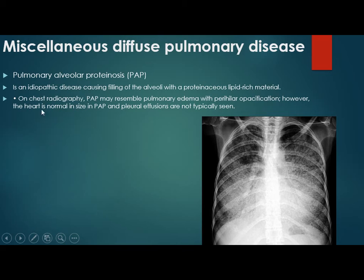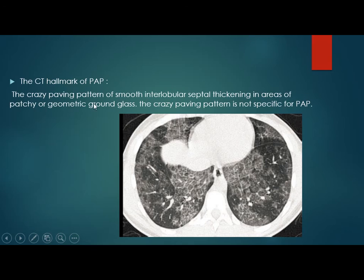Another miscellaneous diffuse pulmonary disease is pulmonary alveolar proteinosis. The characteristic feature is a mosaic geographic appearance, with perihilar opacification while the heart is normal in size with no effusion. This is an idiopathic disease caused by surfactant or lipid-rich material inside the alveoli. The hallmark is the crazy paving pattern — first described in this disease but not specific to it — showing smooth interlobular septal thickening with areas of ground glass, giving the crazy paving appearance.